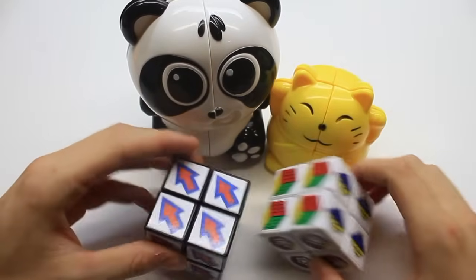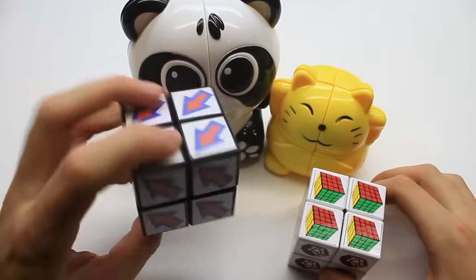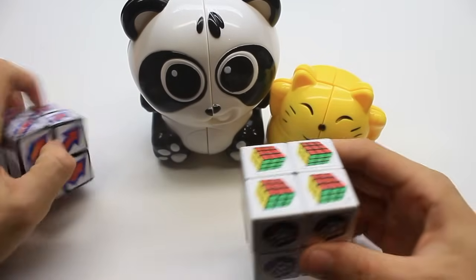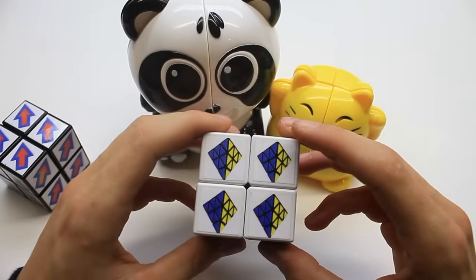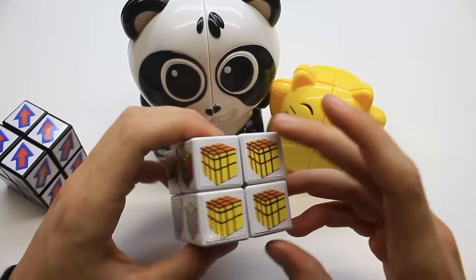For 4x4 shape mods I have this 4x4 axis cube, and then for 2x2 mods I have these two sticker mods which I made. This one is like an arrow cube, and this one actually has a picture of a different puzzle on each side.